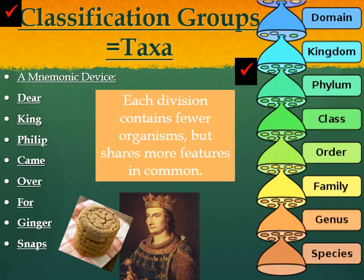The classification groups are the taxonomic categories. We have a mnemonic device: Dear King Philip Came Over For Ginger Snaps — or grape soda, or good sushi. However you remember it, you do you. Each category is like a funnel. It starts off very broad but gets more and more narrow until you are down to one specific species of organism.